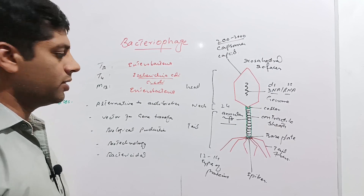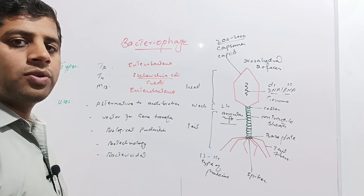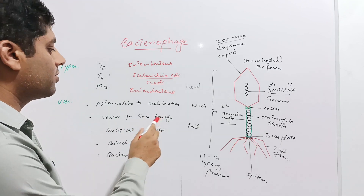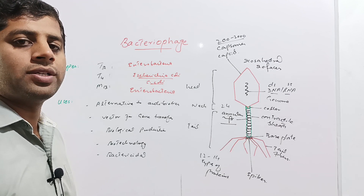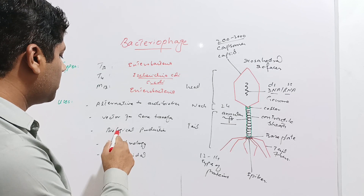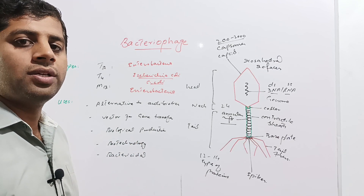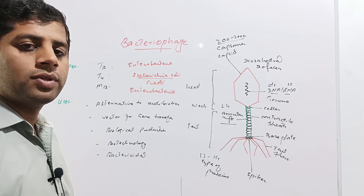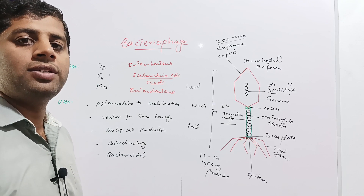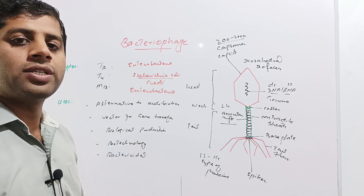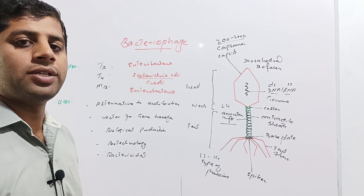The uses of bacteriophage: bacteriophage are used as an alternative to antibiotics, as applied by the Soviet Union. They serve as vectors for gene transfer in genetic engineering, for the transfer of the desired gene from one organism to bacteria for gene cloning. These are also used for biological production, for example, production of enzymes, hormones, antibiotics, insulin, etc. They are also used in biotechnology because they have bactericidal effects and can kill or destroy bacterial structures. So bacteriophage has a lot of applications in biotechnology, molecular biology, biological production, and genetic engineering.